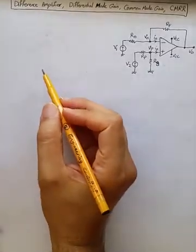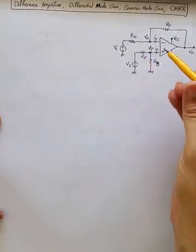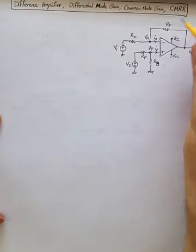This is an illustration of difference amplifier, differential mode gain, common mode gain, and CMRR, or common mode rejection ratio.